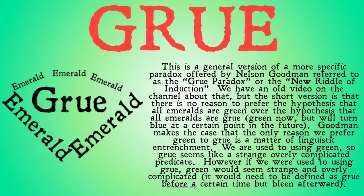This is a general version of a more specific paradox offered by Nelson Goodman, referred to as the Grue paradox, or the new riddle of induction. We have an old video on the channel about that if you want to check it out, but the short version is that there's no reason to prefer the hypothesis that all emeralds are green over the hypothesis that all emeralds are Grue — Grue meaning green now, but they will turn blue at some point in the future. Goodman makes the case that the only reason we prefer green to Grue is a matter of linguistic entrenchment. We're very used to using green, and we think Grue is strange — it seems like a strange and overly complicated predicate.